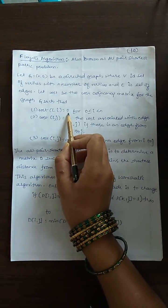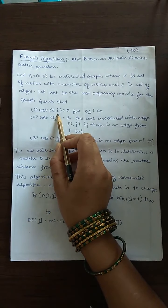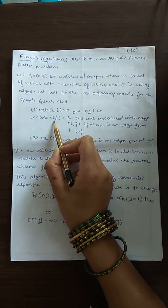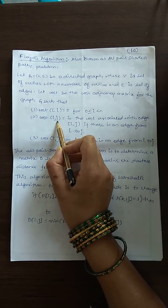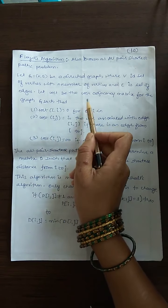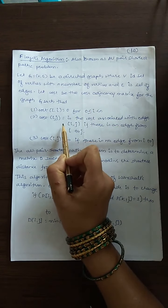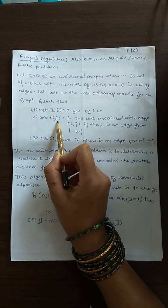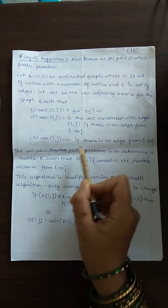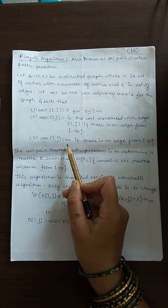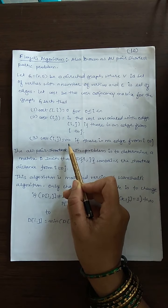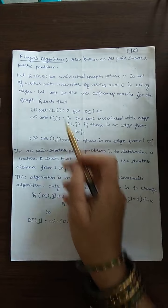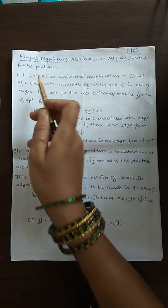In the cost adjacency matrix: from I to I there is no cost, so we write 0 (I to I means a loop, and we are not having loops in our graphs). Then I to J — if there is an edge between vertex I and vertex J, we write its cost or weight in that cell. If there is no edge between I and J, we consider it as infinity to symbolize no edge. Having written the cost adjacency matrix, we apply Floyd's algorithm — the all pair shortest path problem.